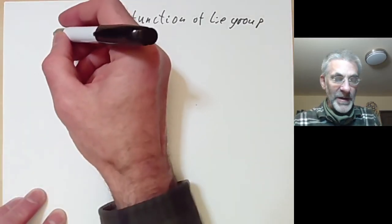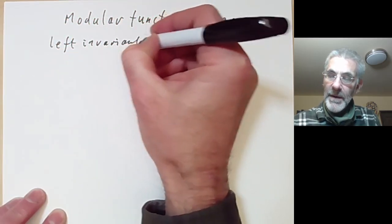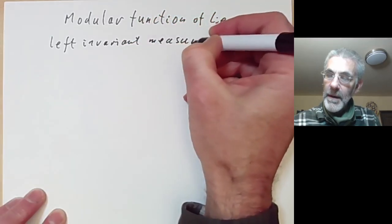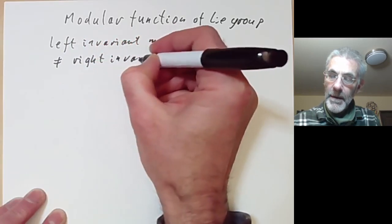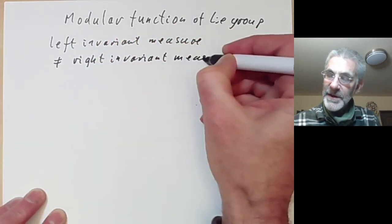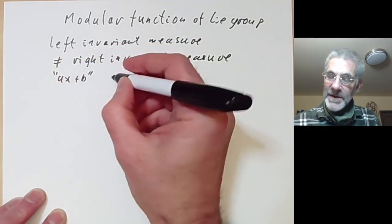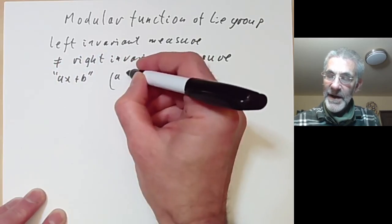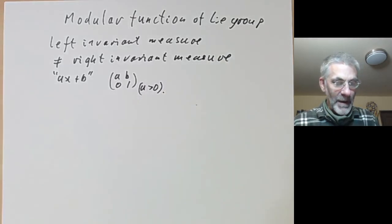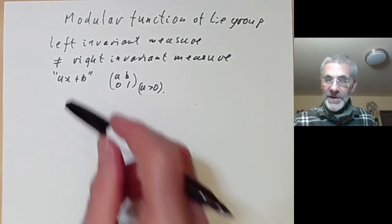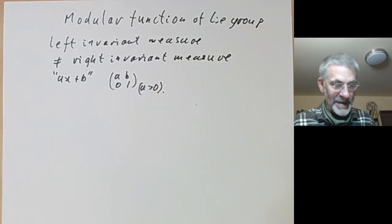In the last lecture we saw that the left invariant measure on a Lie group need not be the same as a right invariant measure. We saw an example of this in the ax+b group, consisting of all matrices of the form [a b; 0 1] with a greater than zero. What we're going to do this lecture is study this phenomenon of when left invariant measures are not the same as right invariant measures.